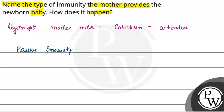The milk which the newborn baby gets from the mother is known as colostrum — us ko colostrum hi bolte hai. And it contains abundant antibodies — is mein bohot saari antibodies hoti hai.